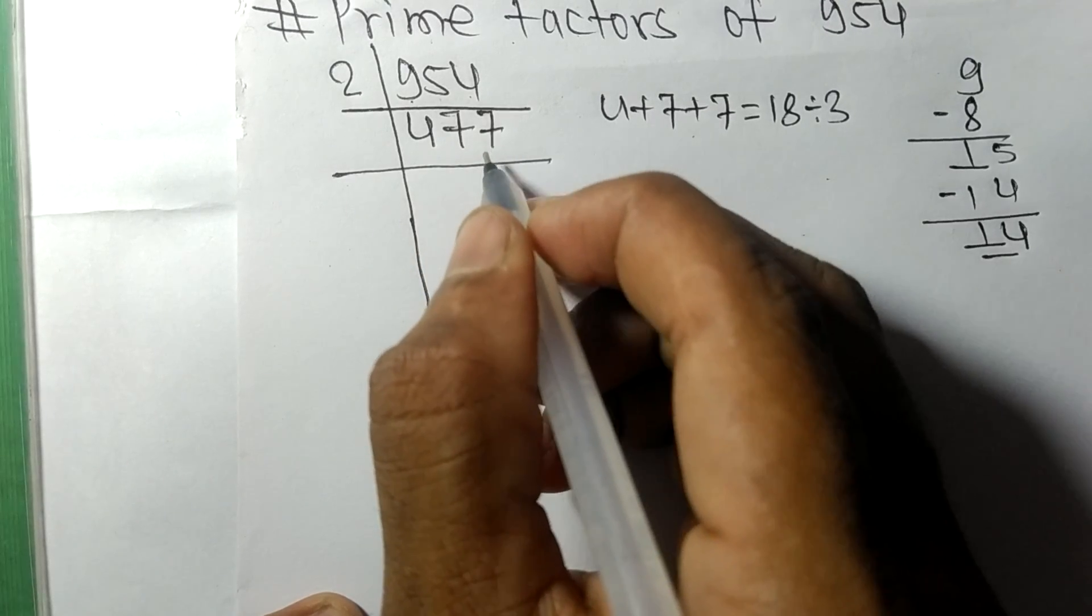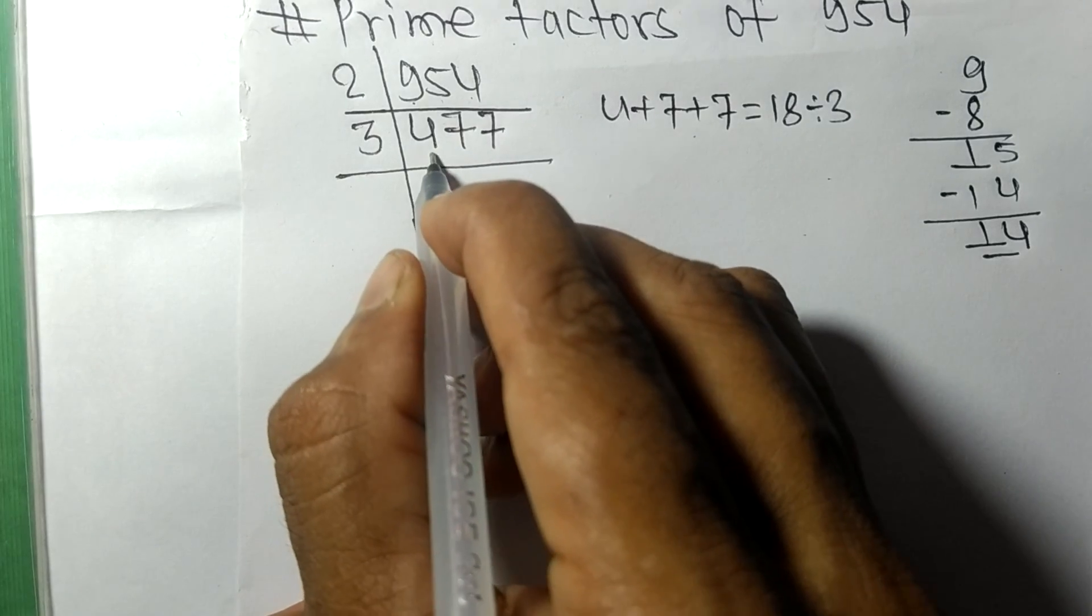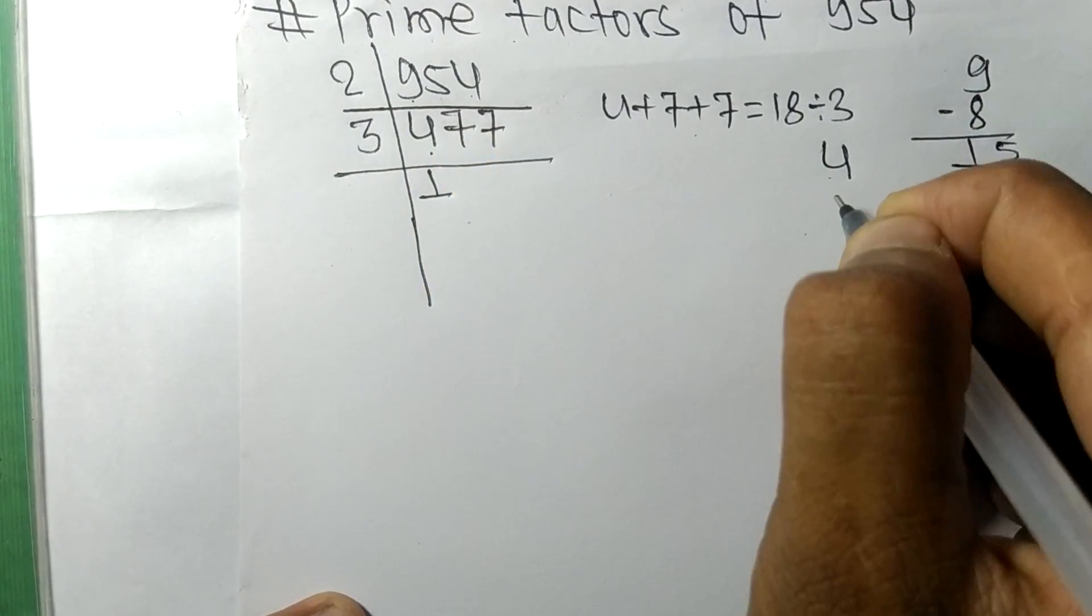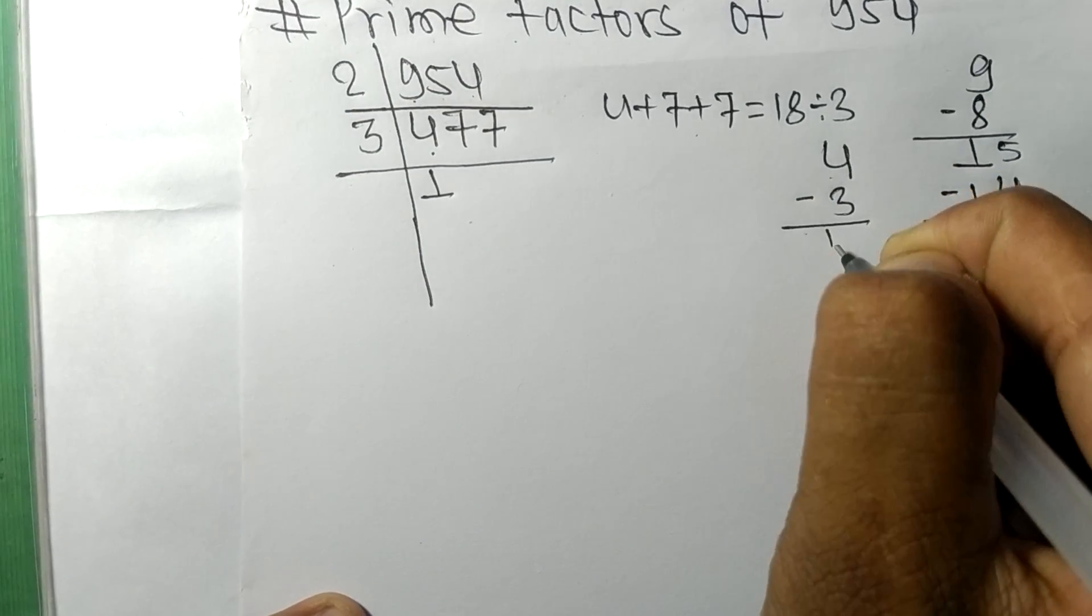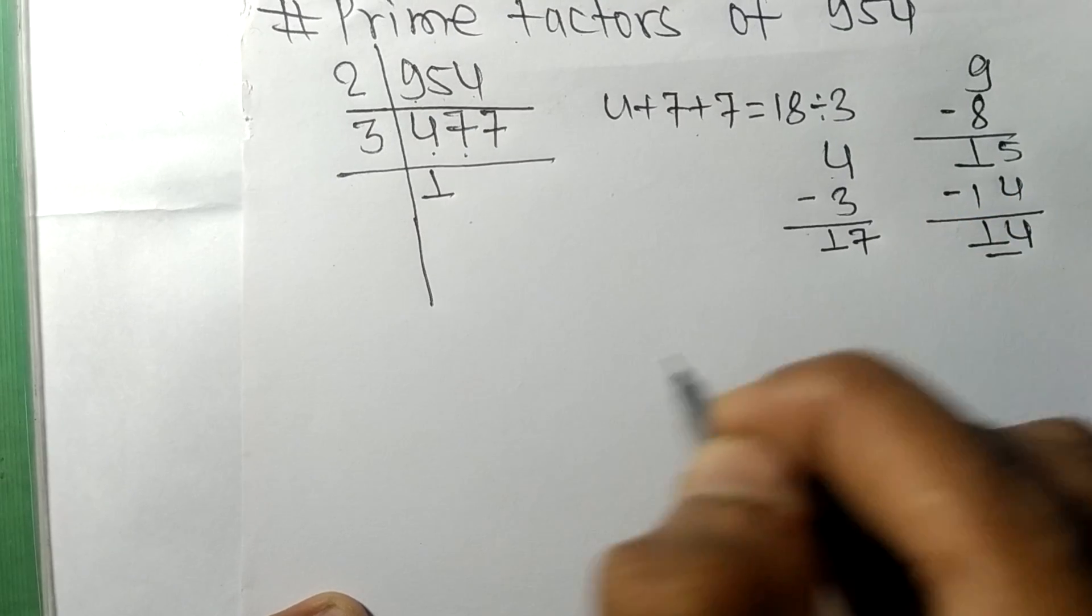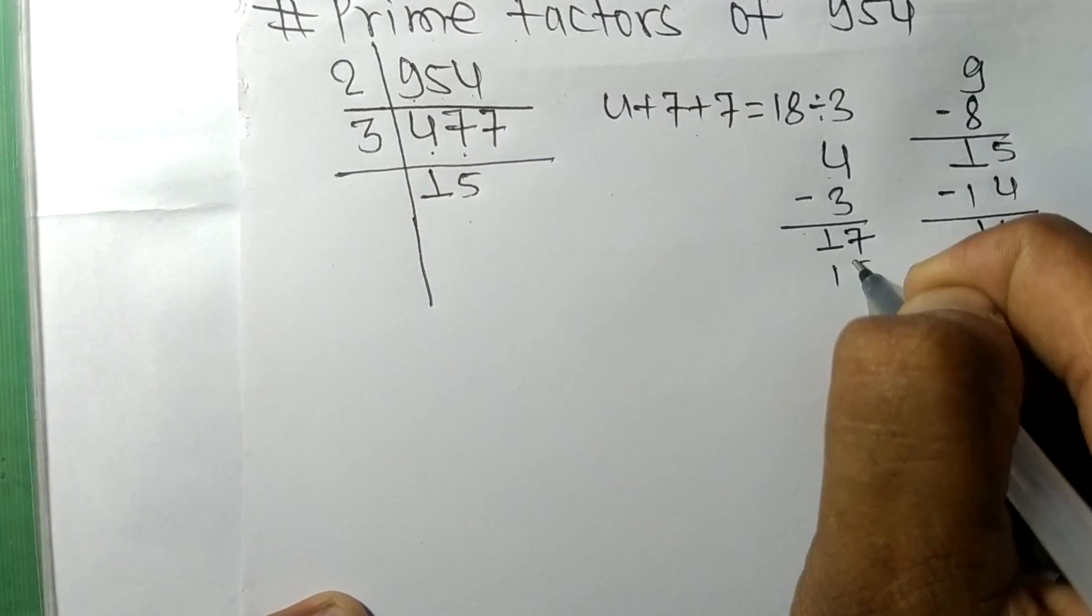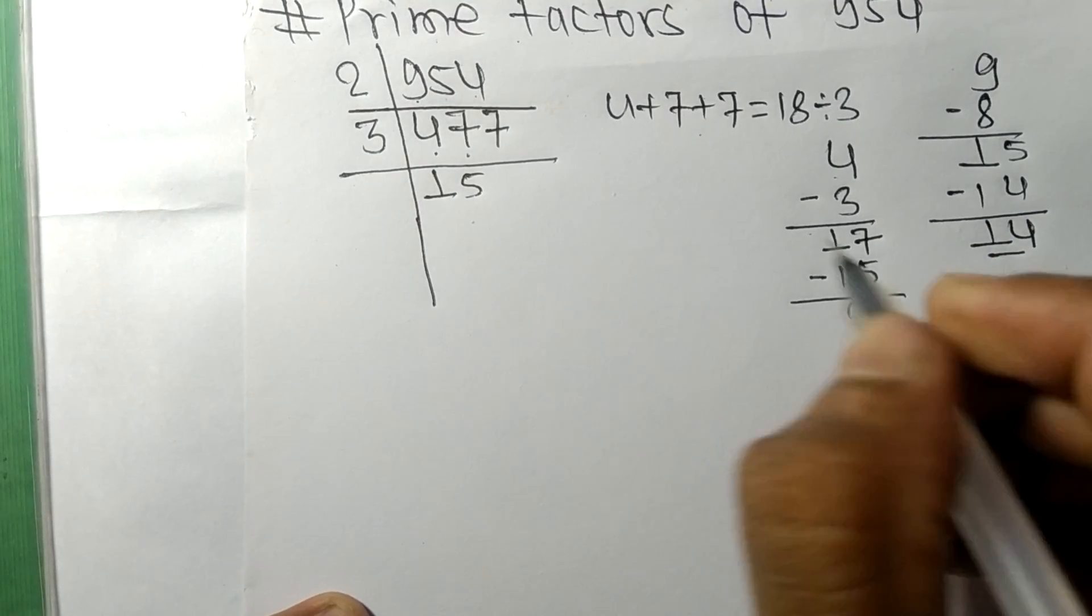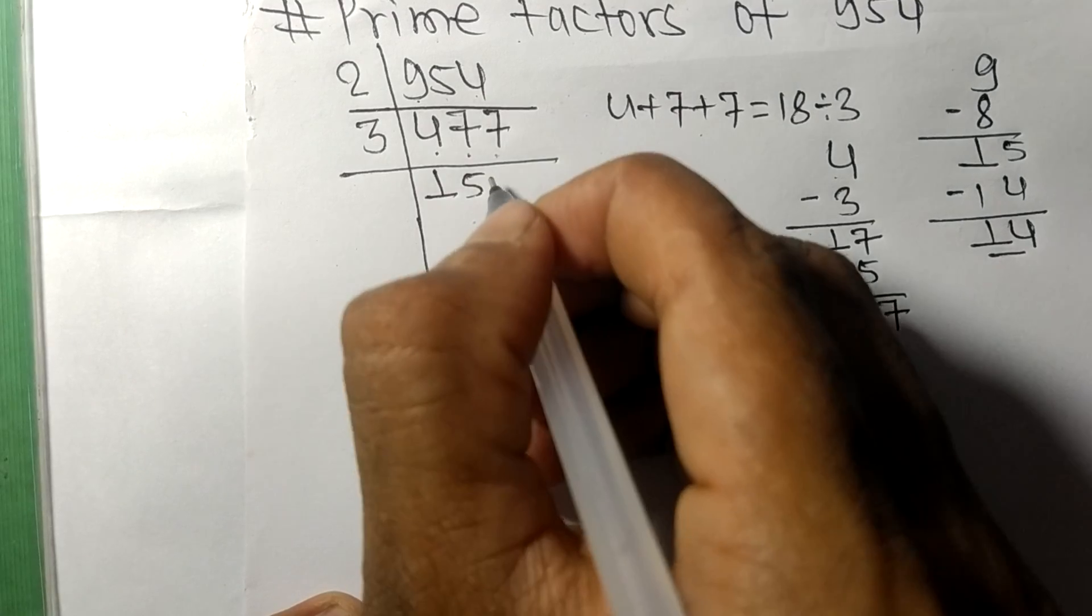So first we have 4. 3 times 1 means 3. On subtracting we get 1. This 7, 17, so 3 times 5 means 15. On subtracting we get 2. And this 7, 27, 3 times 9 means 27.